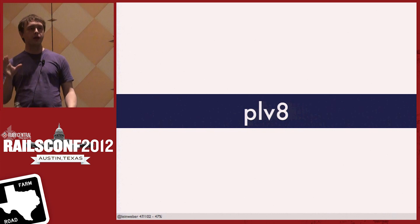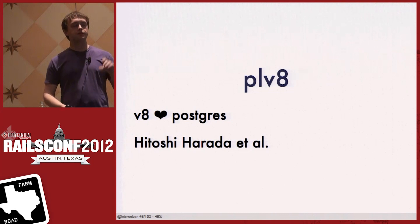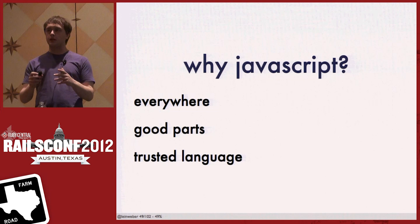The second feature, PLV8, is much more cutting edge and I find it very exciting. PLV8 takes the V8 JavaScript engine and puts it in Postgres. It was made by Hitoshi Harada, and currently Andrew Dunstan has been working on it. With the V8 JavaScript engine, you can now have JavaScript inside Postgres. Why JavaScript? It really is everywhere — the resurgence of JavaScript in the browser, tools like Node. If you stick to the Good Parts book, it's actually an okay language.